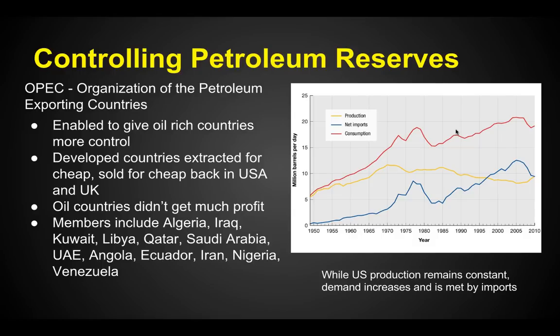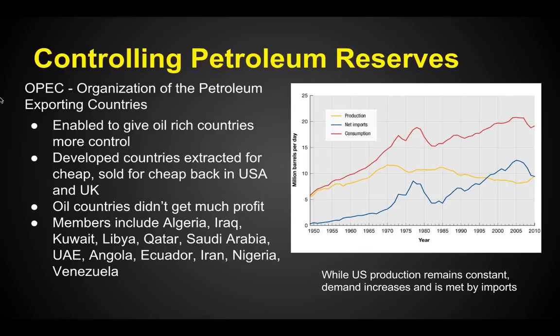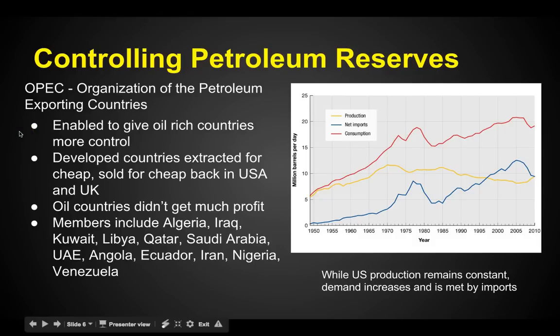Controlling petroleum reserves: if we've got a whole bunch of oil, how do we ration or control it? Well, OPEC — the Organization of the Petroleum Exporting Countries — decided to band together and make a pact to control the petroleum reserves. This enabled oil-rich countries to have more control, rather than just selling it to multiple countries and doing whatever the United States and England were asking. They got together and said, let's control the cost and how and to whom we are selling our petroleum.